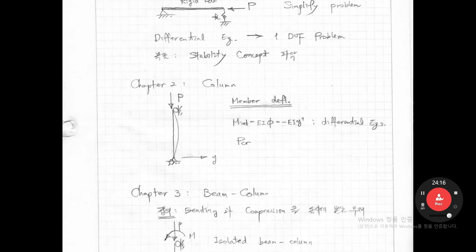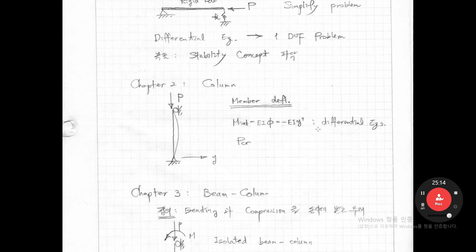Chapter two is the column. The column is subjected to axial load only, not moment. We consider the deformed shape, so P times delta must be considered, and we set up the differential equation. The internal moment equals EI times curvature, which equals -EIy''. From this differential equation, we obtain P_CR, the critical load — the buckling load — which is the load leading to buckling of the member.